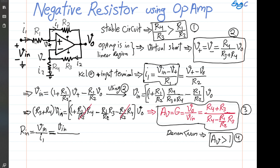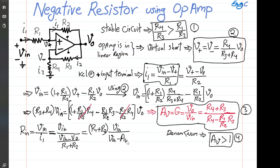I1 is the current flowing through the series combination of R1 and R2 between Vin and Vout, so I1 equals (Vin minus Vout) divided by (R1 plus R2). Substituting Vout equals Av times Vin, and canceling Vin from numerator and denominator, we get Rin equals (R1 plus R2) divided by (1 minus Av).